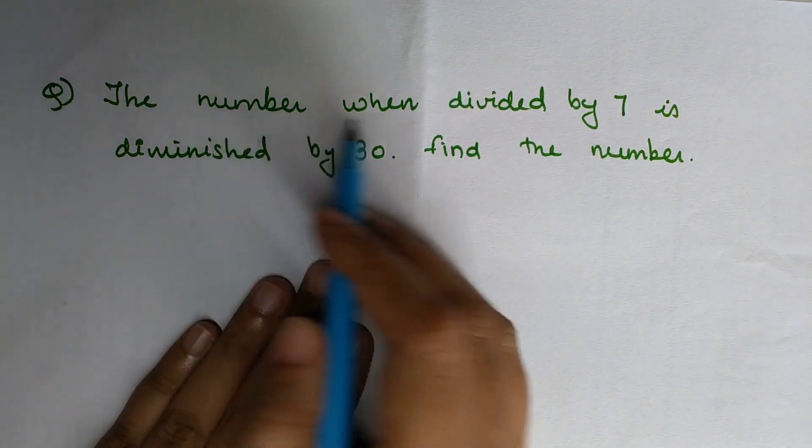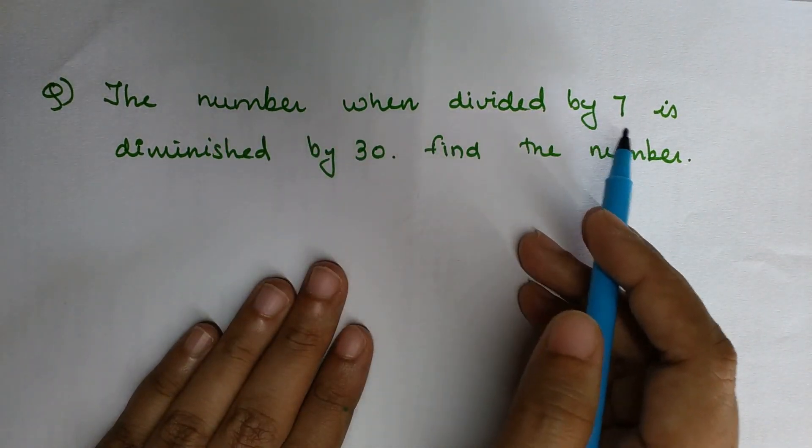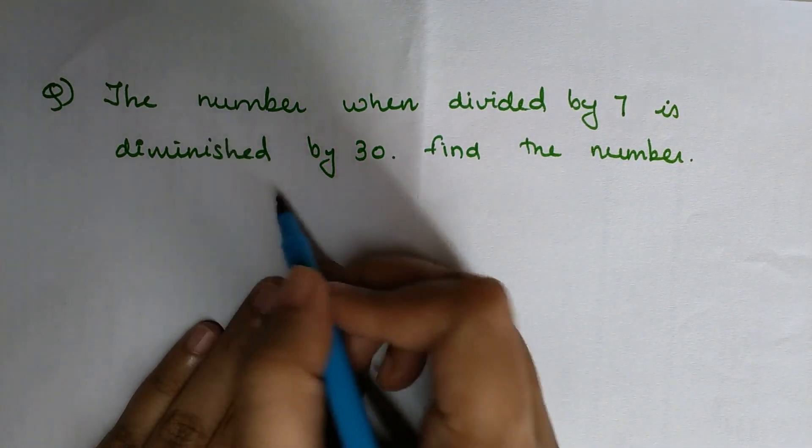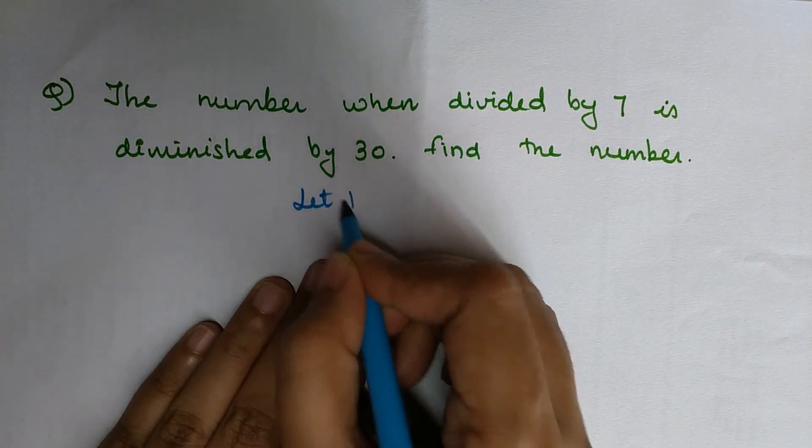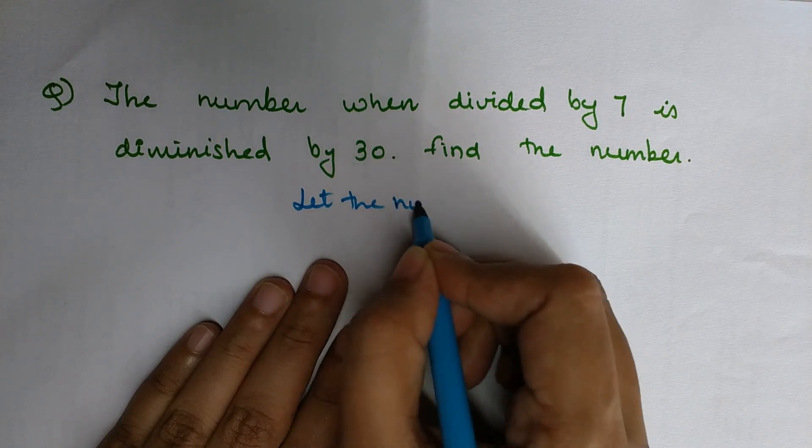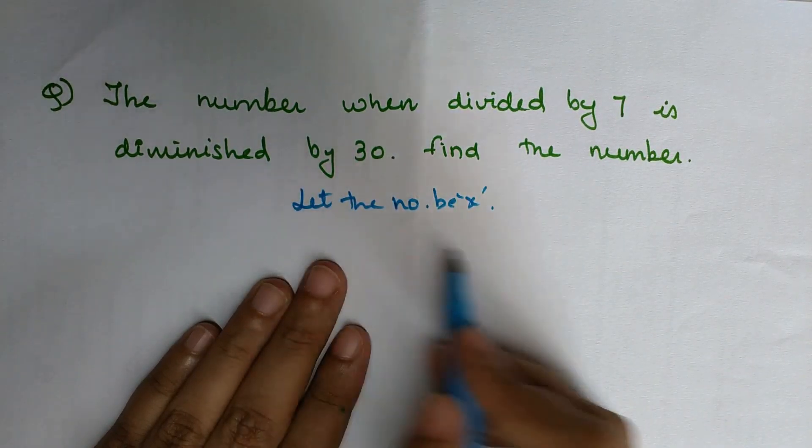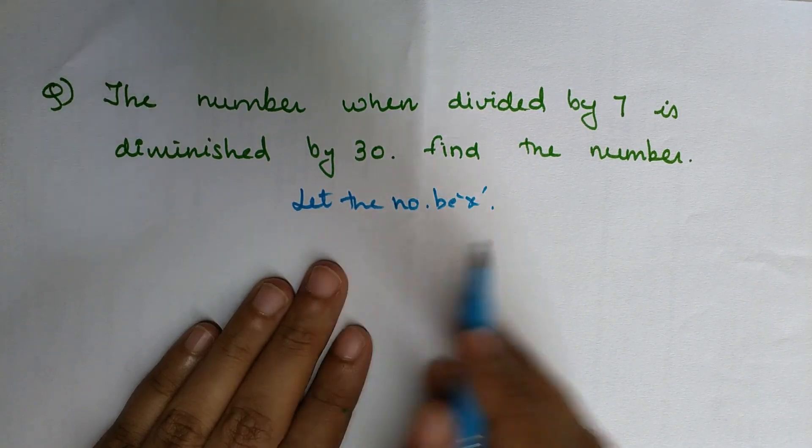The next question is: A number when divided by 7 is diminished by 30. Find the number. First, we'll say let the number be x. Students, for explaining purposes I'm writing all of this, but while solving you just...